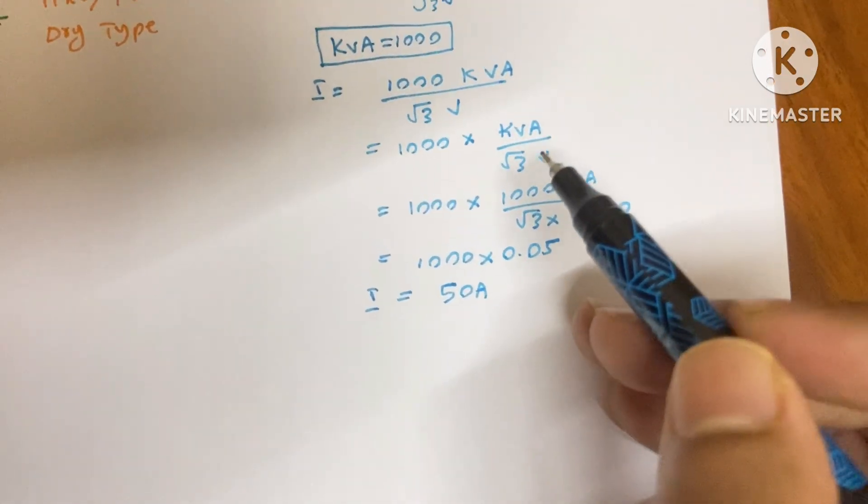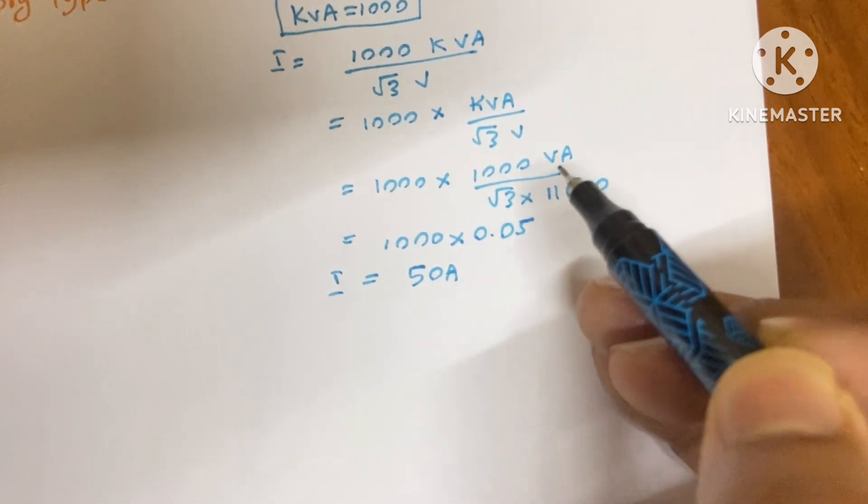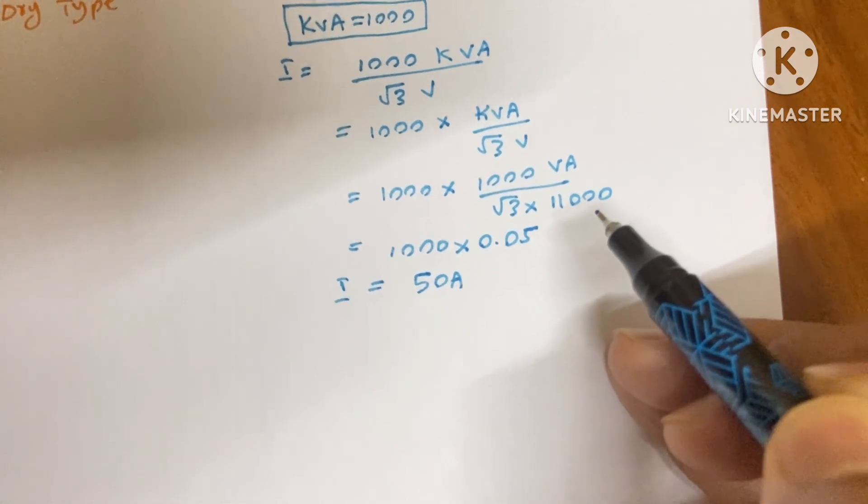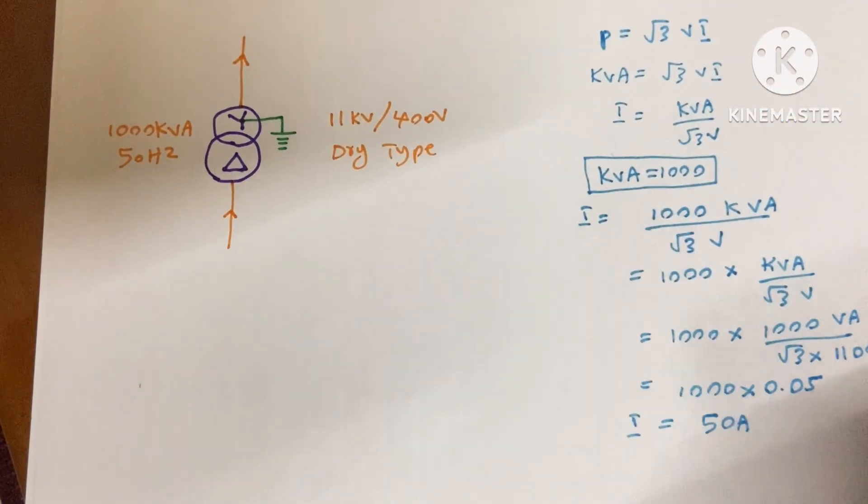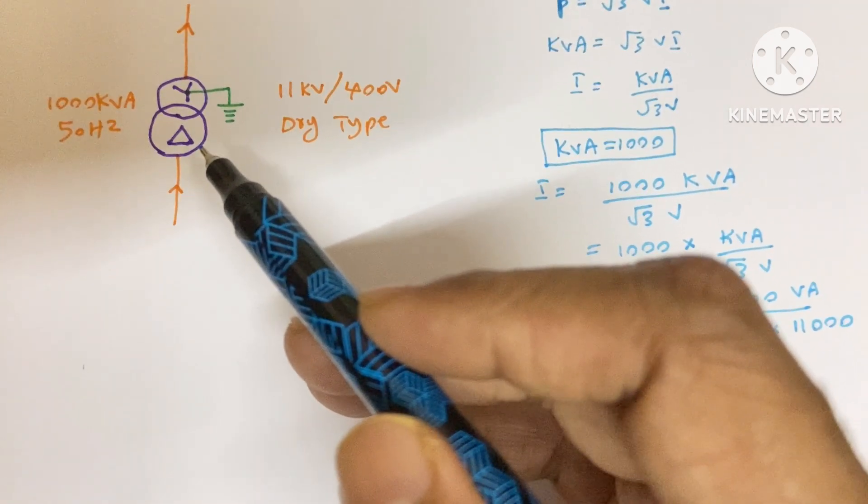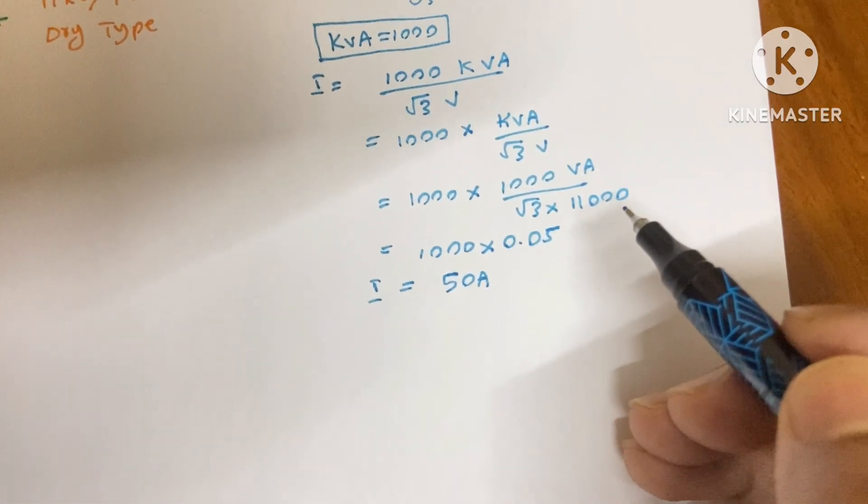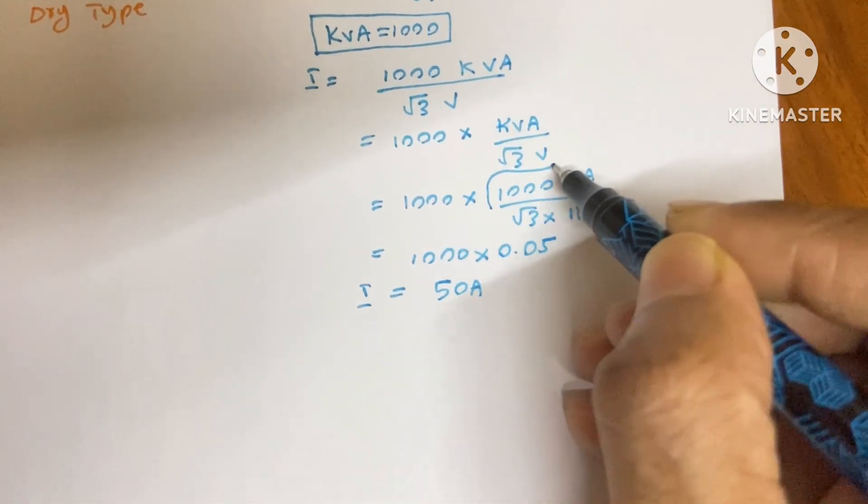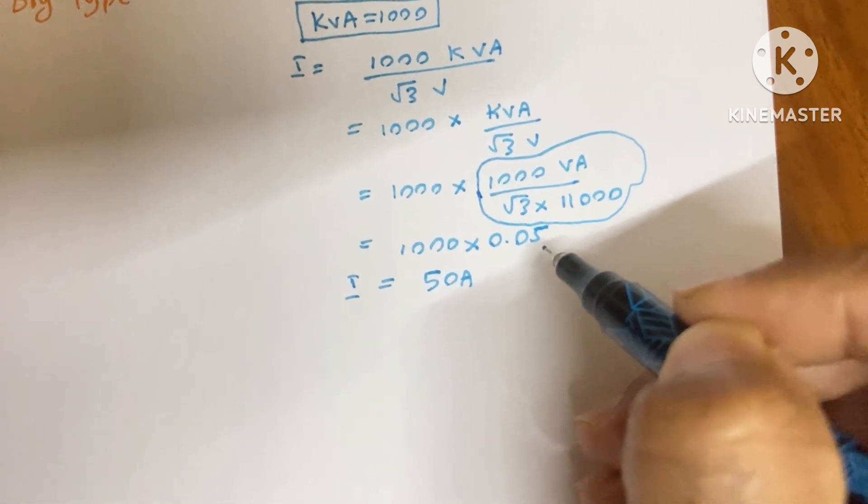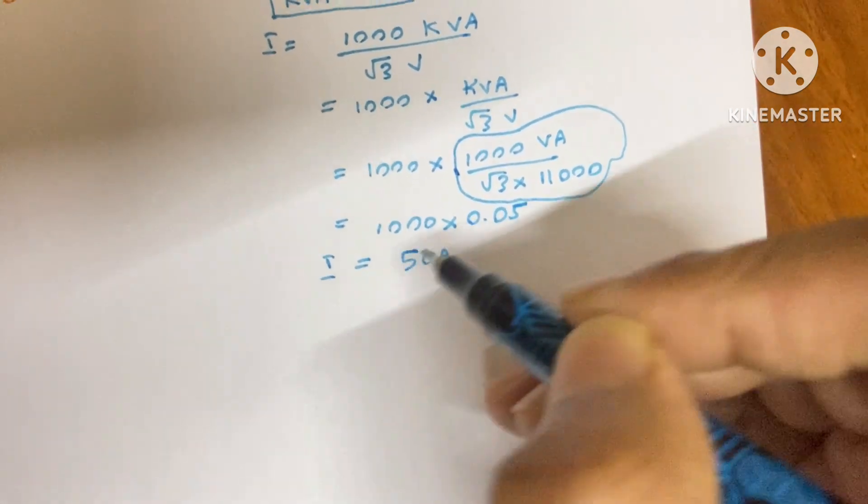Now I wrote 1000 for the kilo. Now it is 1000 VA by root 3 into voltage is 11000, because here we are going to find the current on the primary side of the transformer. The primary side voltage is 11 kV means 11000 voltage. Now for this we will get 0.05, so our answer is 1000 into 0.05 is equal to 50 A.